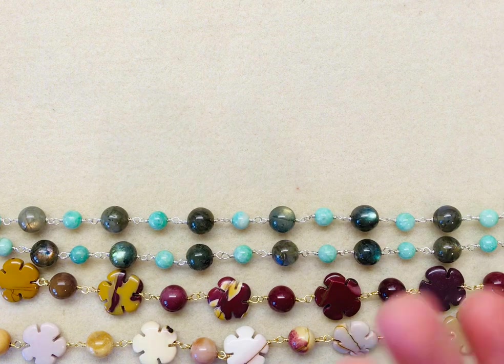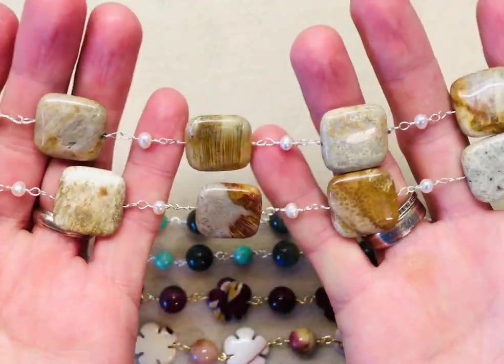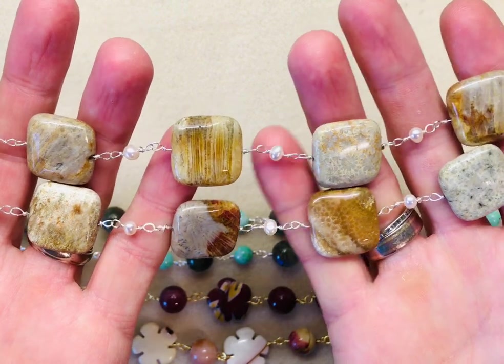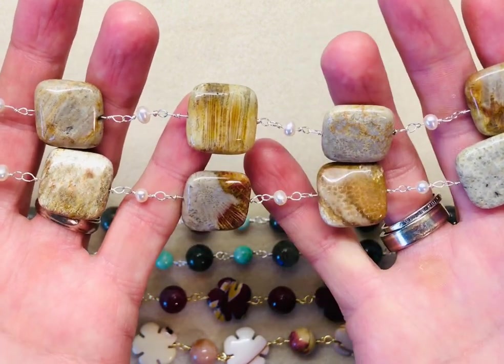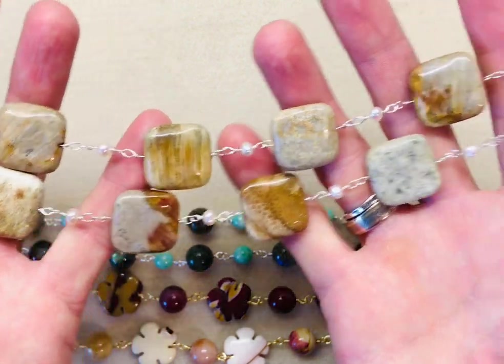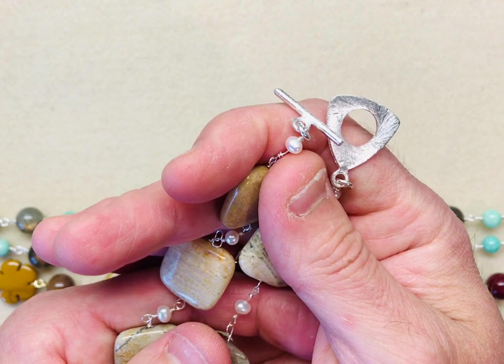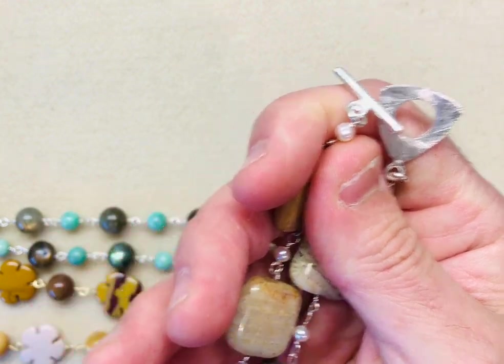Now this one is one of my favorite pieces using fossil jasper. These are amazing squares and again in between I've popped some little seed pearls just to break the necklace up a little bit. I've used a clasp on this one so it's a put on and off piece of jewelry.